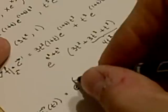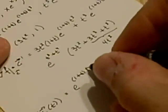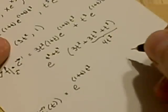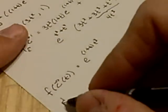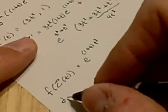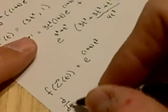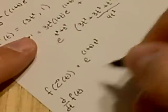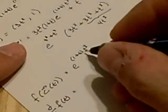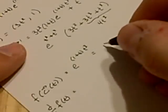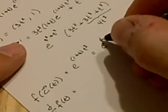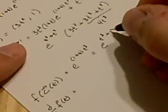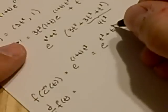So we have e to the 1 plus t, t cubed. We can differentiate this explicitly, viewing this as a function of t. Simplifying this, we'll have e to the t cubed plus t to the 4th.